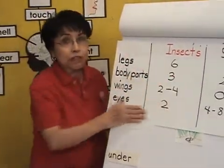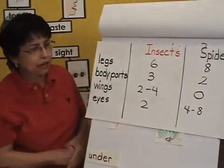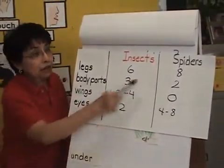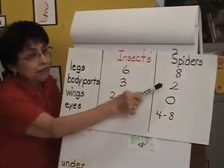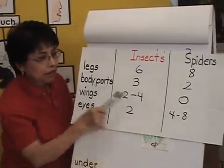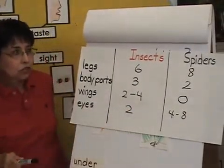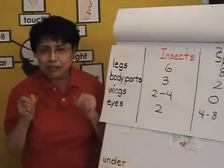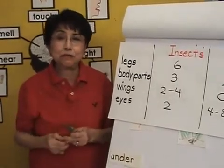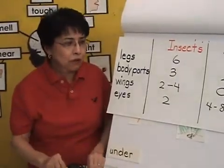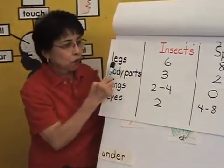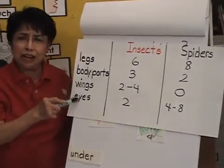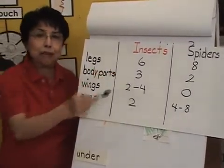After we finish with our chart, let's compare. What is the difference between a spider and an insect? Spiders have more legs, fewer body parts, and no wings at all. So this is a very good way to compare the two, and the best way is to look at the two of them side by side. Notice how we're working with numbers, working with words — a lot of print, a lot of reading, and at the same time, a lot of math.